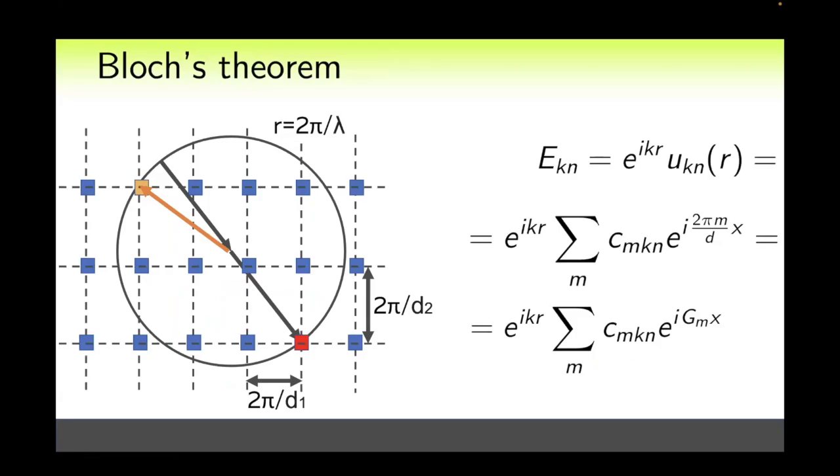Let us recall Bloch's theorem. It states that in any periodic structure the field should look like this: an exponent where k belongs to the first Brillouin zone multiplied by some periodic function. The periodic function can be expanded into a Fourier series, and in this exponent the reciprocal lattice vector will appear. We see that Bloch's theorem tells us that all possible reciprocal lattice vectors are added to each wave vector. And the Ewald sphere tells us that the wave can leave the lattice and go into infinity only if its k vector satisfies the dispersion law of light, omega equals c k.